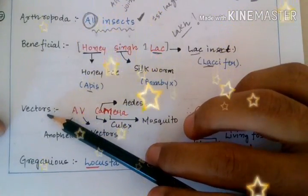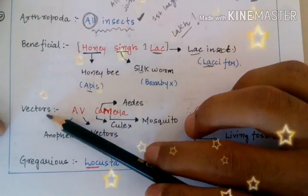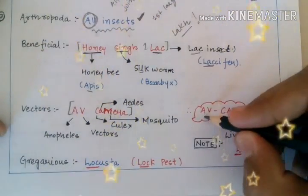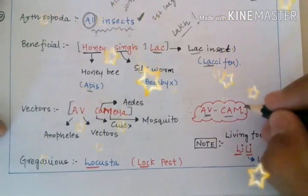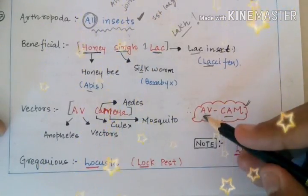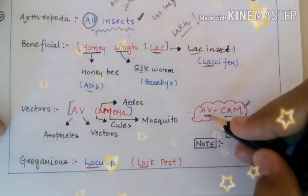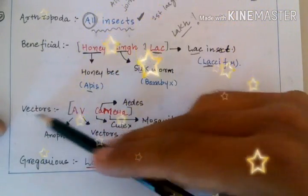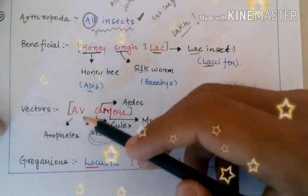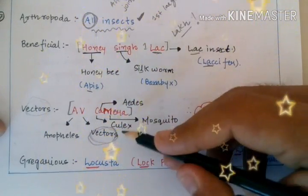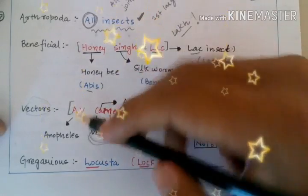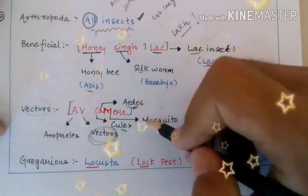Some Arthropods are vectors for different kinds of diseases. The trick to remember those vector Arthropods is 'AV Cam' — audio video camera. With the help of a cam, we can record audio as well as video. In this trick, A means Anopheles — female Anopheles — and V means vectors, since we are talking about vectors.